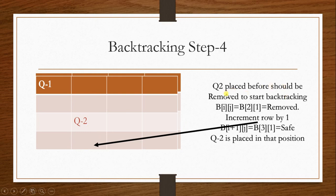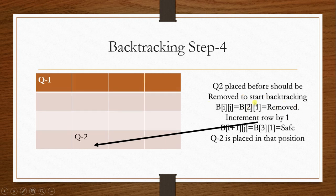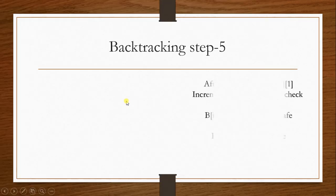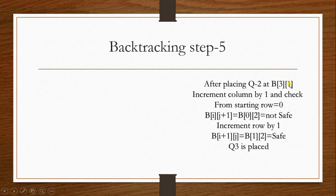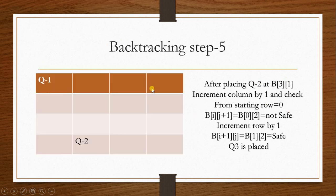During backtracking, Q2 is removed from position [2][1], incremented by one row, and placed at the incremented position. Then the next column is checked for a safe location for queen number 3. After placing Q2 at the new location, the column is incremented and the next column is checked.